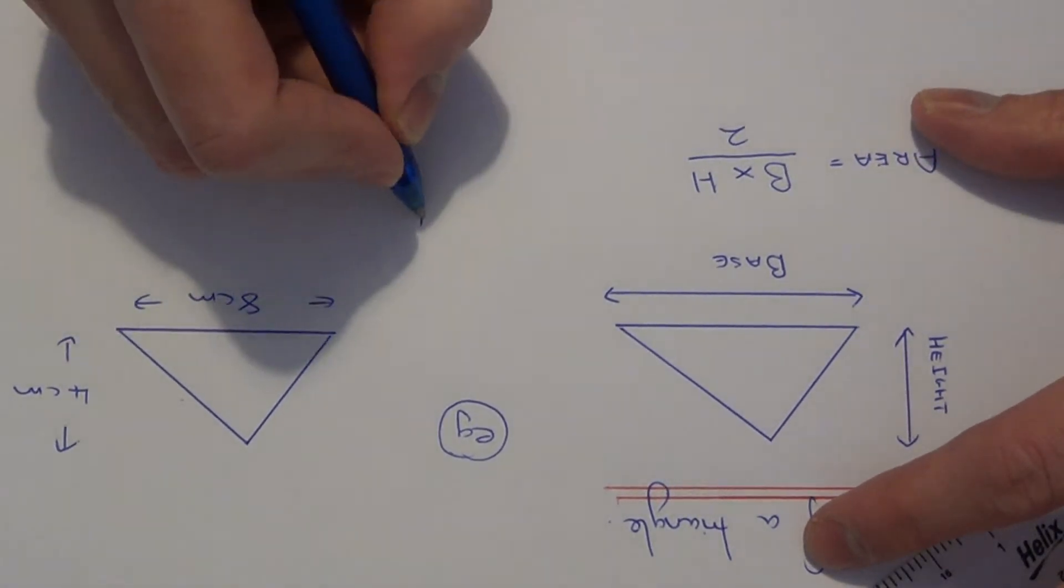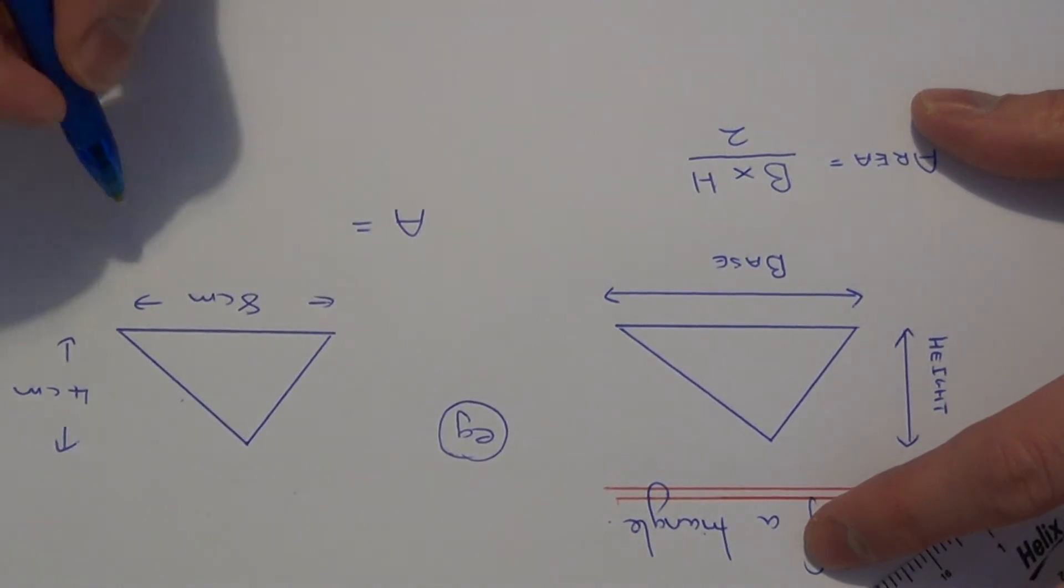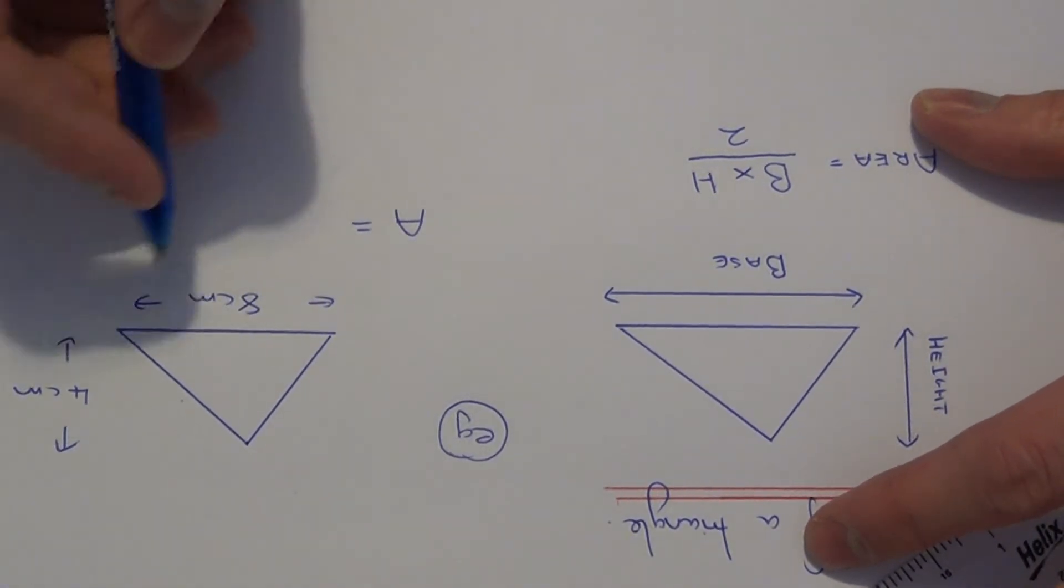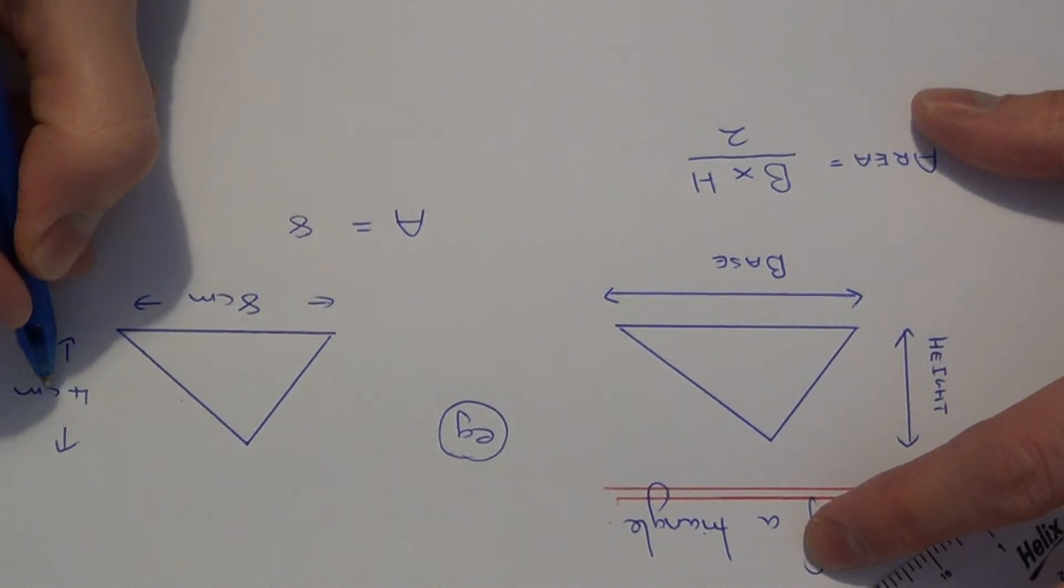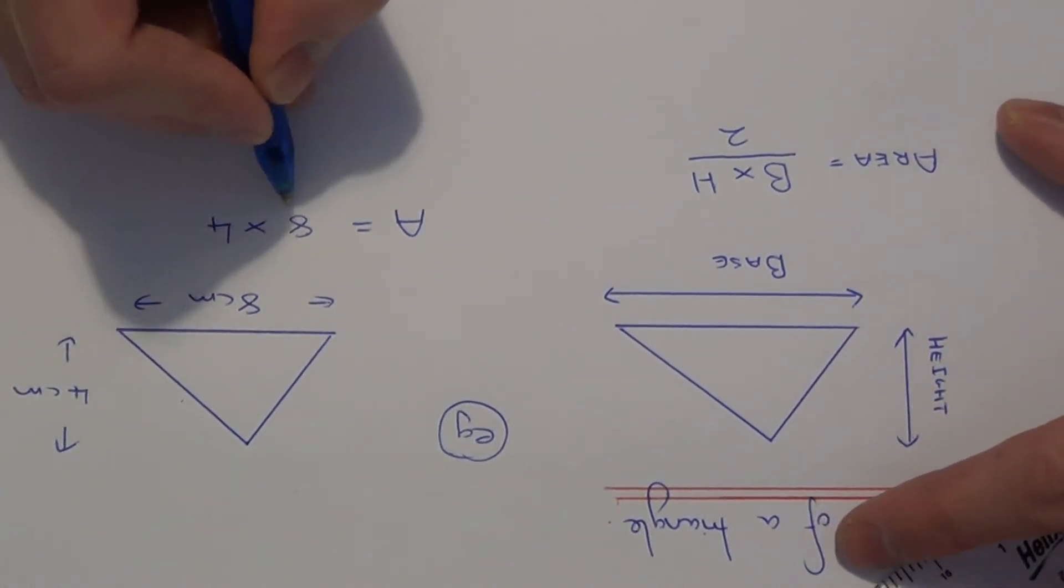All we need to do is use the formula base times height divided by 2. The base is 8, multiply by the perpendicular height of 4, and divide the answer by 2.